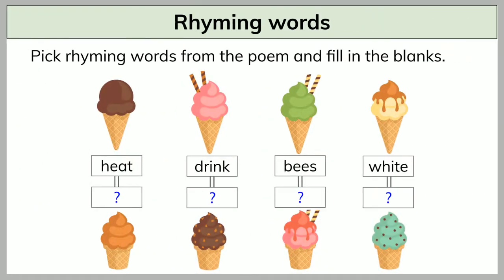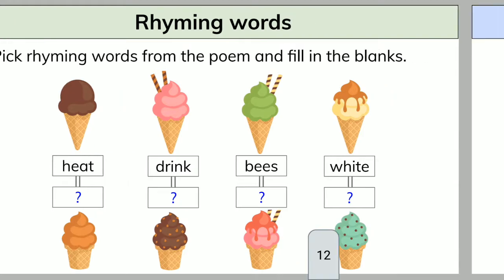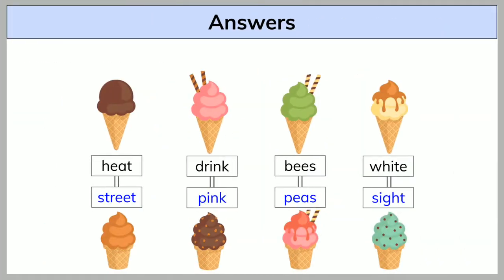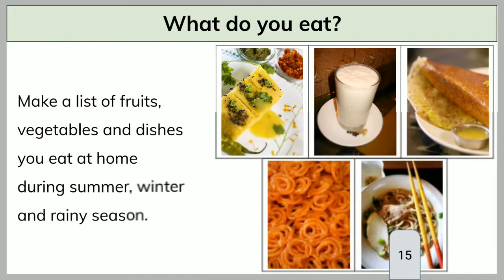So pick rhyming words from the poem and fill in the blanks: heat, drink, bees, white. So heat — rhyming word street; drink — pink; bees — trees; white — sight; food we eat.